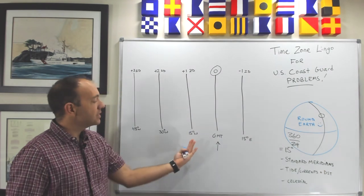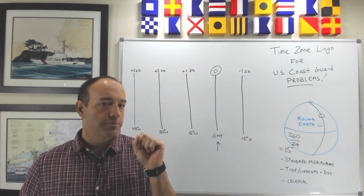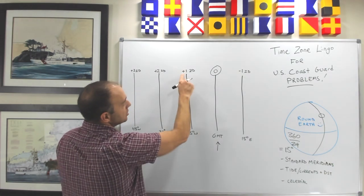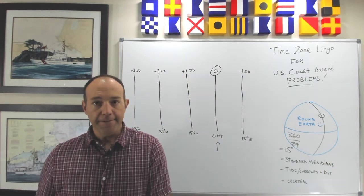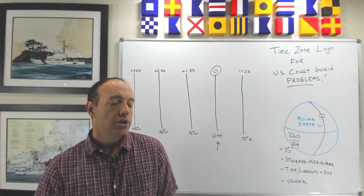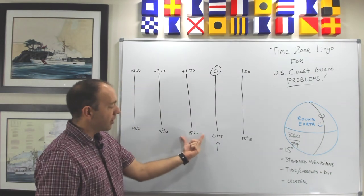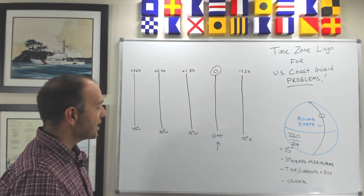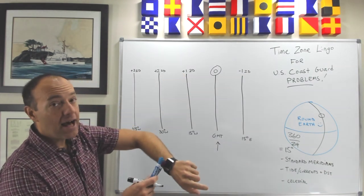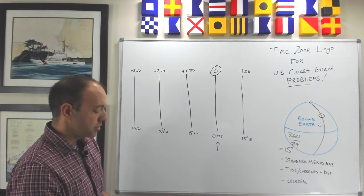Now if you go 15 degrees to the west, 15 degrees to the west you have changed time zones by one hour. And so this would be what's known as plus one ZD in Coast Guard lingo. That ZD stands for zone descriptor. And so that's telling you that for this region here, around 15 degrees west longitude, you need to add one hour to your zone time, your time on your watch, in order to get back to Greenwich mean time.